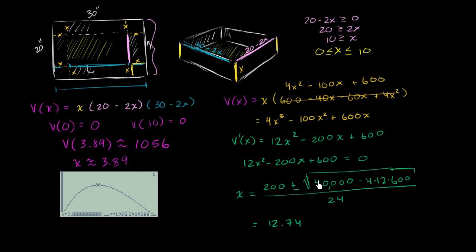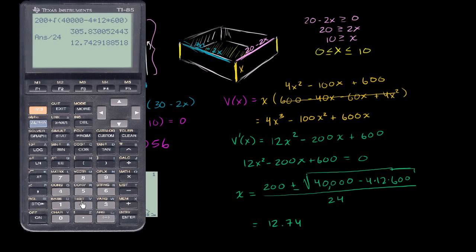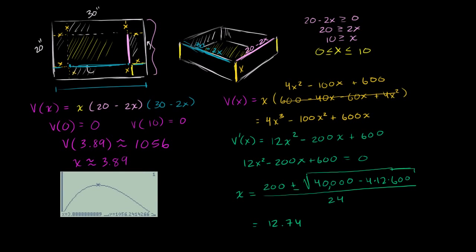And now let me do the situation where I subtract what I had in the radical sign. So now let me do 200 minus the square root of 40,000 minus 4 times 12 times 600. And I get that's just the numerator. And then I'm going to divide that by 24. And I get 3.92. So it's 12.74 or 3.92.